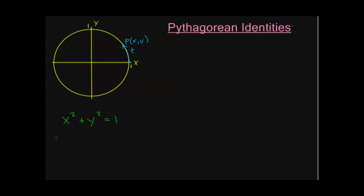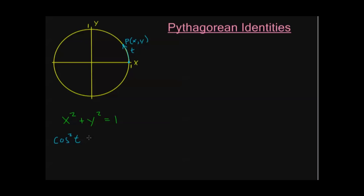So just plugging that in directly, I have cosine squared of t. Notice I put the squared before the t — that means I'm squaring the entire function cosine. This is the same thing as writing cosine of t, the whole thing squared. This should not be confused with cosine of t squared. I know you say it the same way, but seeing it written down you can see how that might be confusing. So be careful: if that squared is before the t, that means I'm squaring the entire function after I plug in t.